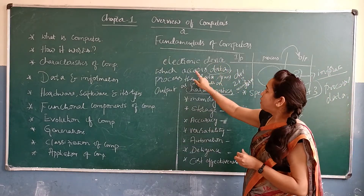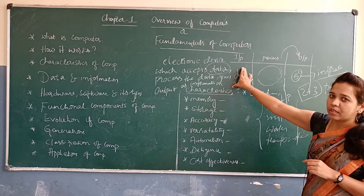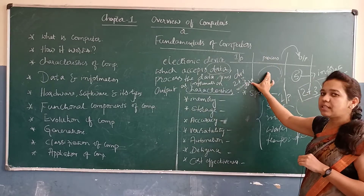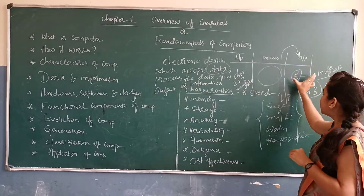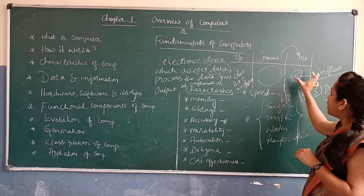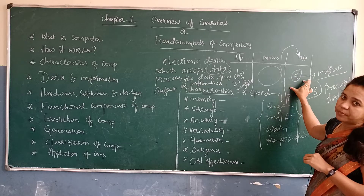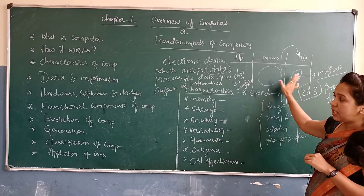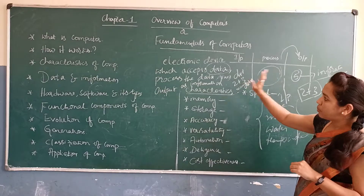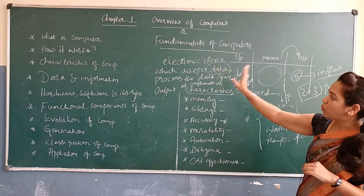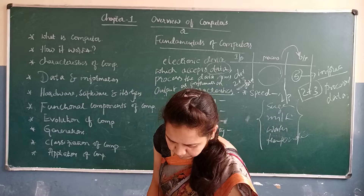So a computer is an electronic device. It accepts the data, then it processes the data, then it gives the output as an information. That is about how it works. Next, let us look at the characteristics of computer.